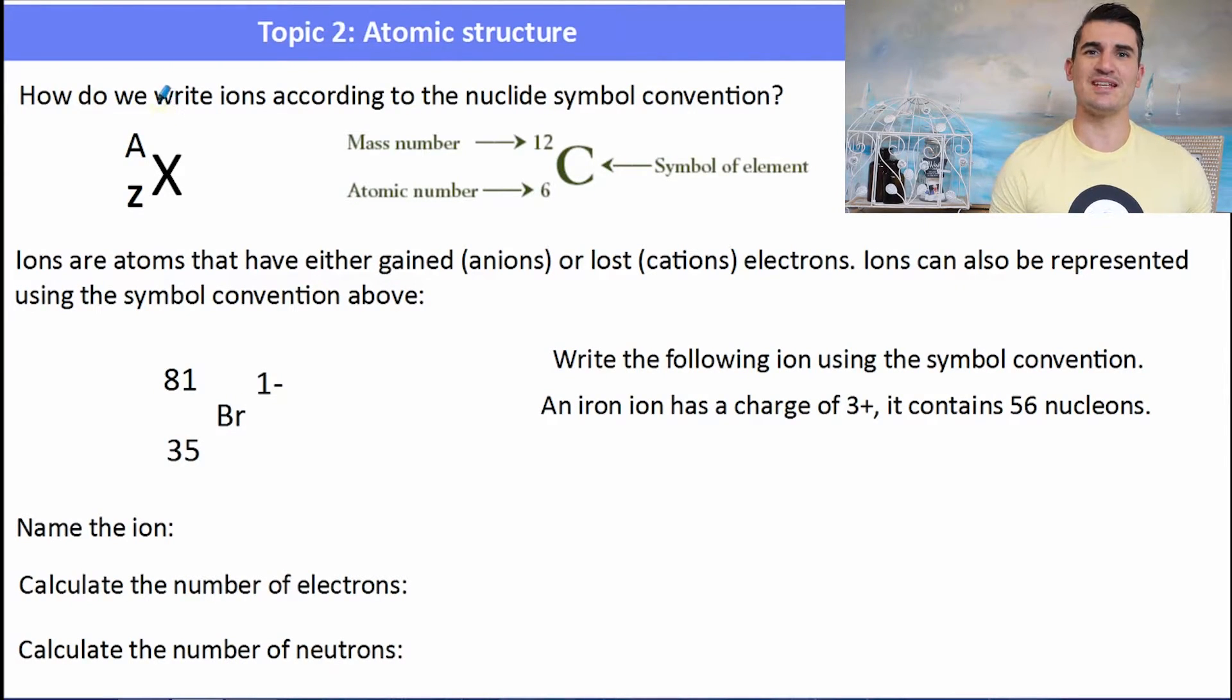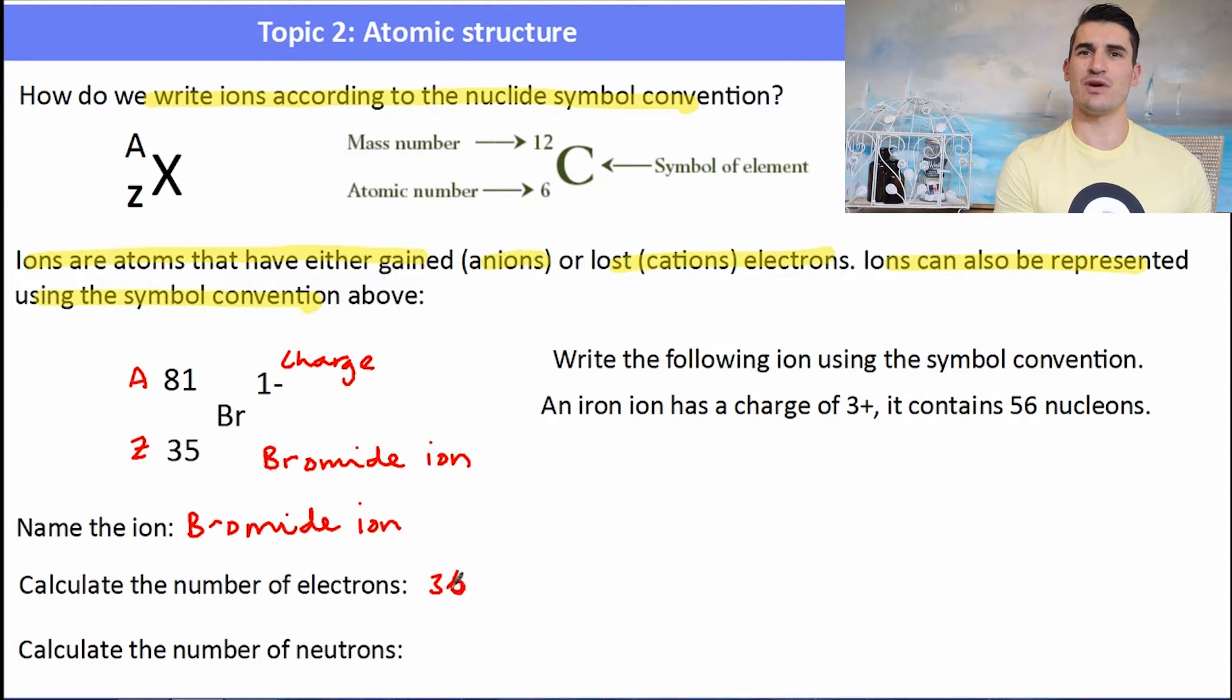Here we have some ions that we need to write the formula for. Ions are atoms that have either gained or lost electrons. Atoms that have gained electrons are called anions. Atoms that have lost electrons are called cations. They can be represented in the same way with our mass number, our atomic number, and then also our charge which is now in the top right hand corner. The charge tells you how many electrons it's either gained or lost. This would be known as a bromide ion. It's bromine but it's gained an electron so we call it bromide. A neutral bromine element would contain 35 electrons. But because this is negative 1 charged, it means it must have gained an electron which means it will have 36 electrons. The number of neutrons would be the mass number take away the atomic number which would be 46.